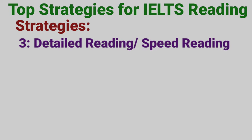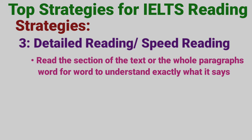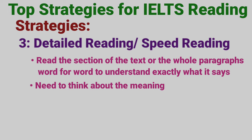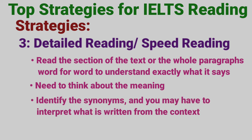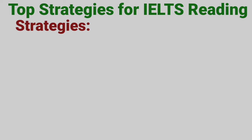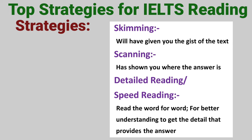The third strategy is detailed reading or speed reading. In this skill, you need to read the section of the text or whole paragraphs word for word to understand exactly what it says. You need to think about the meaning, and there will be synonyms to identify. You may also have to interpret what is written from the context. In these three strategies, skimming gives you the gist of the text, scanning shows you where the answer is, and detailed reading — word for word — gives you the detail that provides the answer.